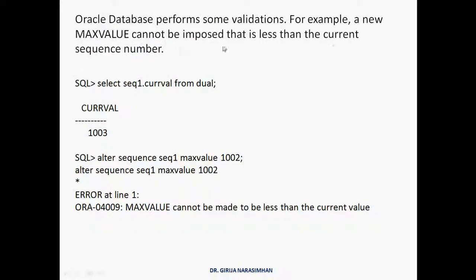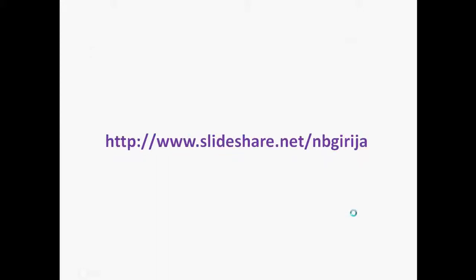So, if I do less than, new max value cannot be imposed less than the current sequence number. Current sequence number is 1003. I am altering max value to 1002. That's why I say max value cannot be made to be less than the current value. Because it already reached the maximum value. That's why we get an error.